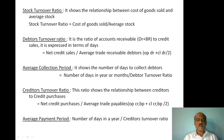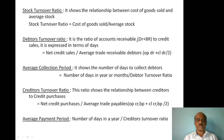Debtor Turnover Ratio, also known as Accounts Receivable Ratio, is the ratio of debtors and bills receivable to credit sales. It is expressed in terms of days or times. The formula is: Net Credit Sales divided by Average Trade Receivables.